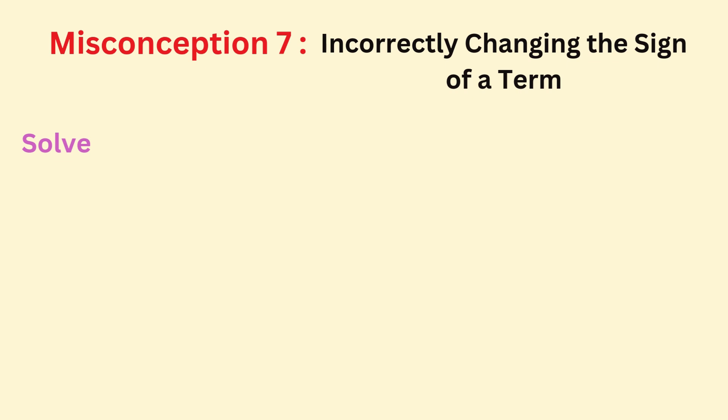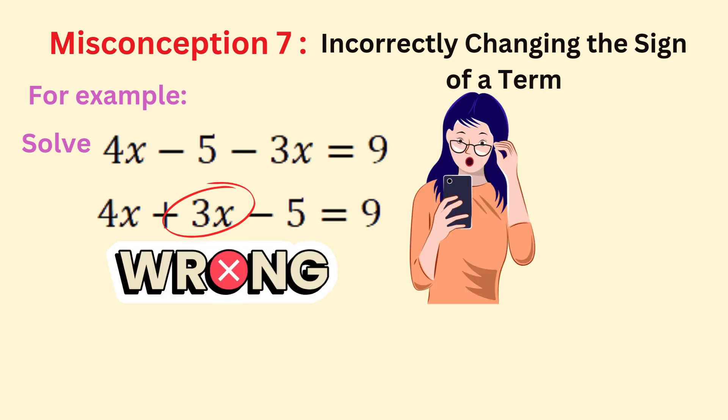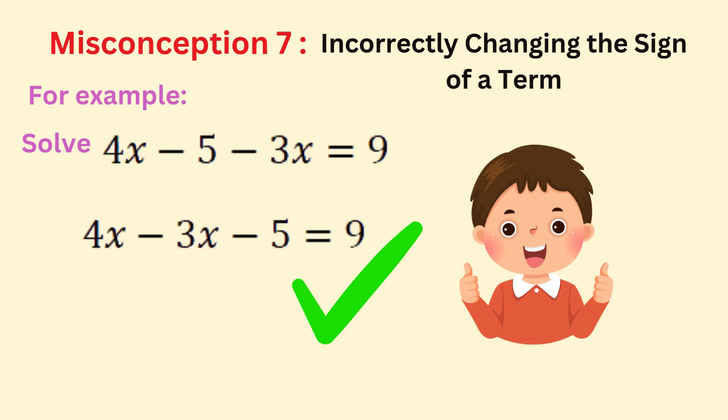In equations like 4x - 5 - 3x = 9, some students might think that moving the -3x next to the 4x will change the sign of the terms. This is wrong. The signs stay the same since it's still on the left relative to the equal sign. The correct way is to combine like terms: 4x - 3x - 5 = 9, and you get x - 5 = 9.